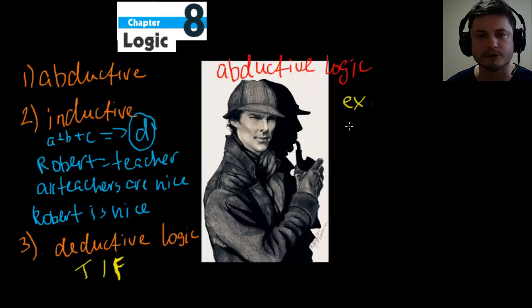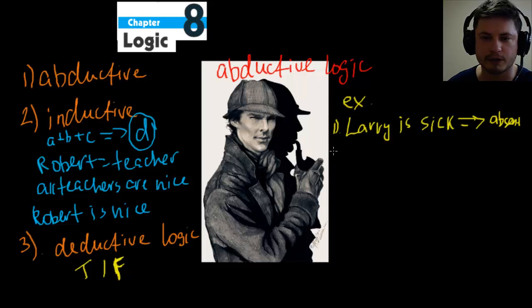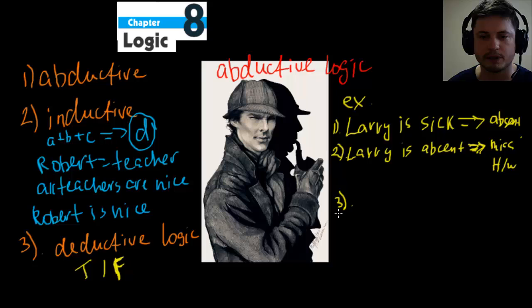So a good example here would be something like this. Let's just say there's a student named Larry. And if Larry is sick, then he will be absent. If Larry is sick, he will be absent. And number two logical statement here, deductive statement would be, if Larry is absent, and this is absolute statement, if Larry is absent, he will miss homework. He will miss his homework. And so what conclusion can we deduce from here? And the conclusion is that if Larry is sick, he will miss homework. And this is an example of deductive reasoning.